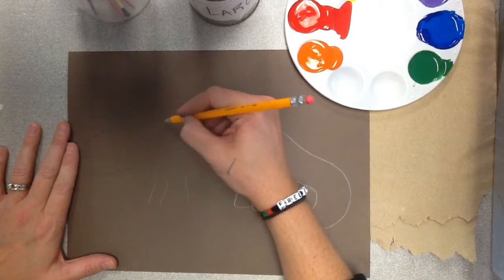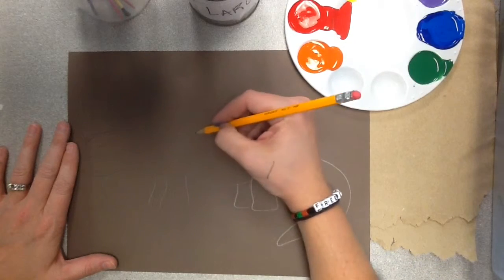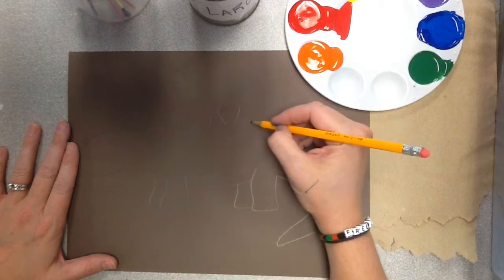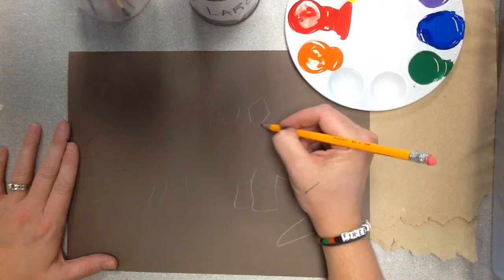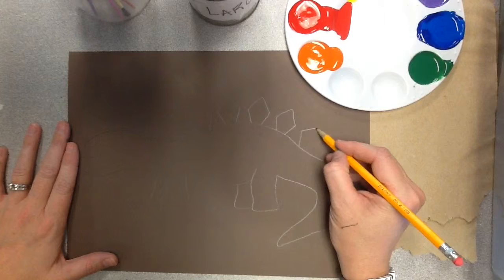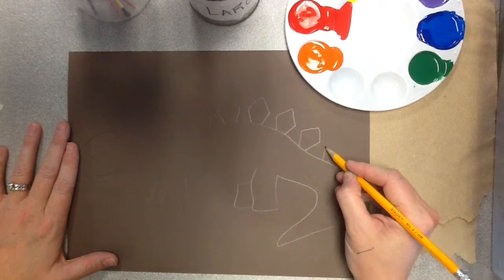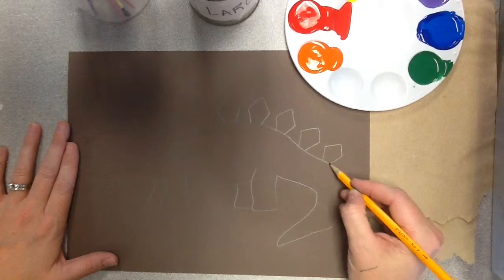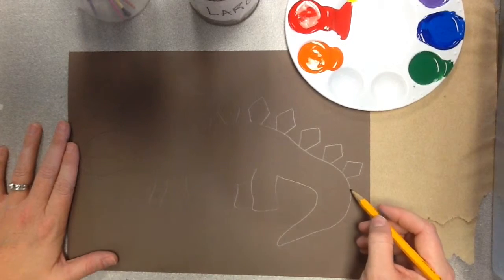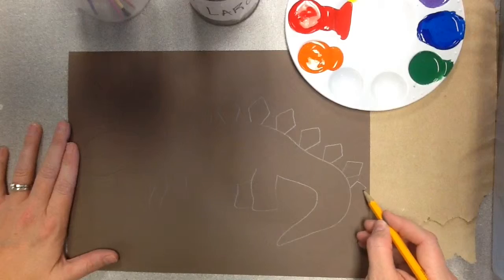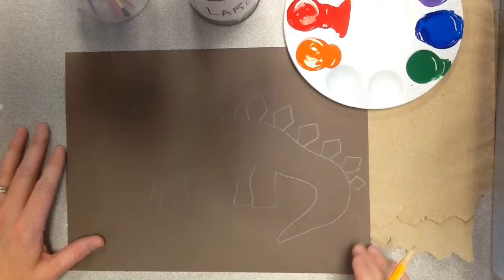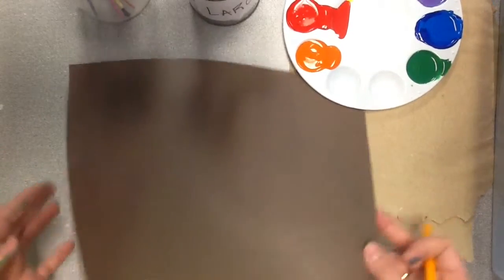I'm going to do some scales on this guy. I'm just doing a really simple pencil drawing. And we're using brown paper because a lot of aboriginal art is on either brown or black paper. So that's why we're choosing that. Oh, I need my eyeball. Okay, so I've got a really simple dinosaur shape here.